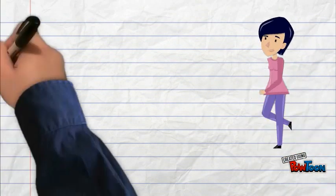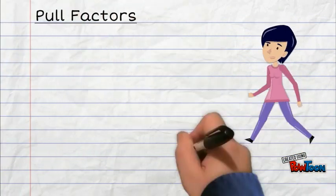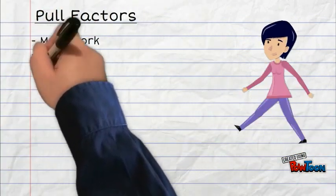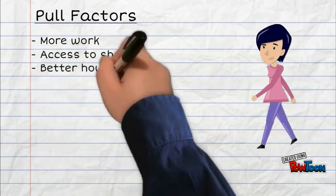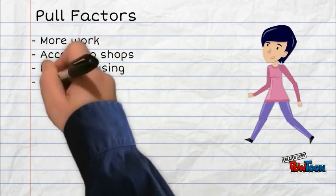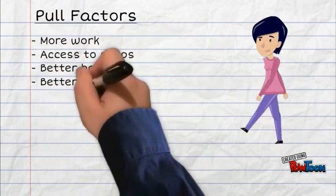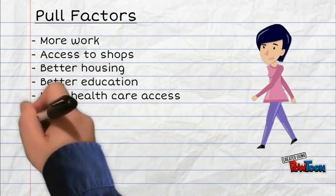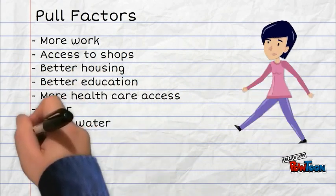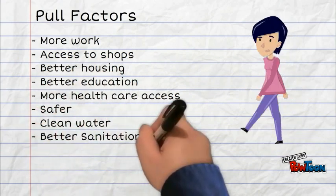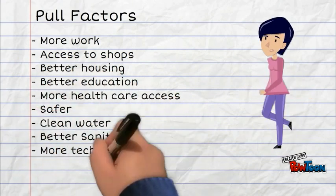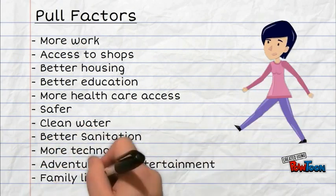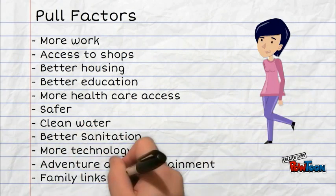Pull factors can include more work, access to shops, better housing, better education, more health care access, safer conditions, clean water, better sanitation, more technology, adventure and entertainment, and family.